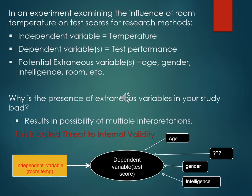Even though an experimenter claims there is one independent variable and one dependent variable — meaning you manipulated only that independent variable — it's very difficult to ensure in actual experimentation that the only change across two or more conditions (control and experimental) is the independent variable you're claiming. Let's look at an example.